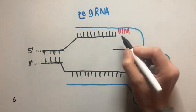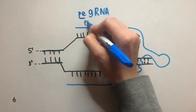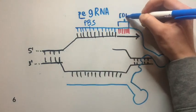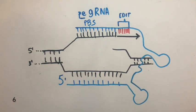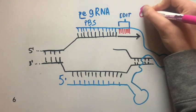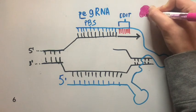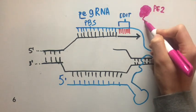The PEG RNA contains a primer binding site to initiate transcription of new genetic information, and a reverse transcriptase template, with edits for the targeted DNA changes. PEG RNA needs the help of prime editors to edit the genome accurately and efficiently. There are two key editors in this process.